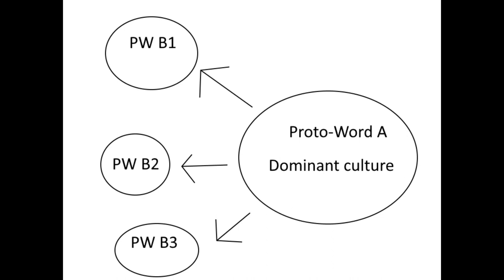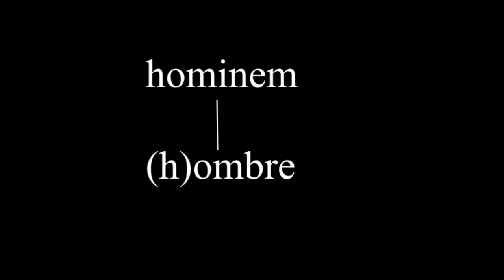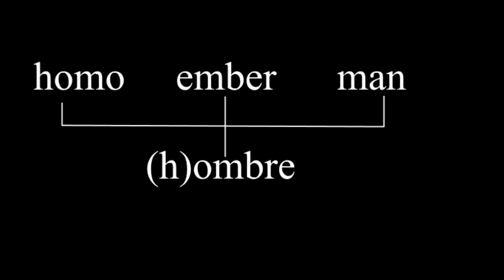Take for example the origin of the word 'ombre' in Spanish. According to academics, it stems from the Latin word 'homo.' If that's the case, why don't Spanish people just use the word 'homo'? The reason, in my opinion, is that this word has multiple stems: Latin 'homo,' Hungarian 'ember,' and possibly the word 'man.' 'Ombre' was created from the mixture of these words. You may wonder how the word 'ember' got there — I will discuss it in further videos.